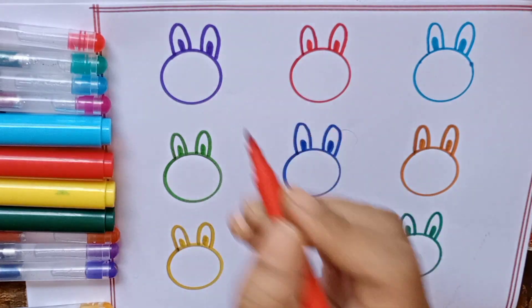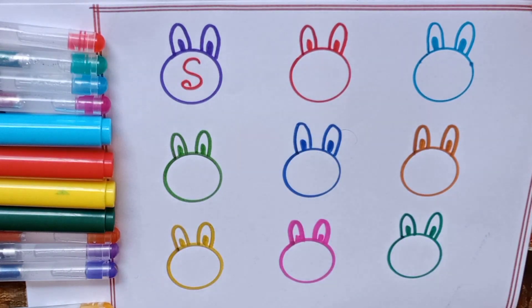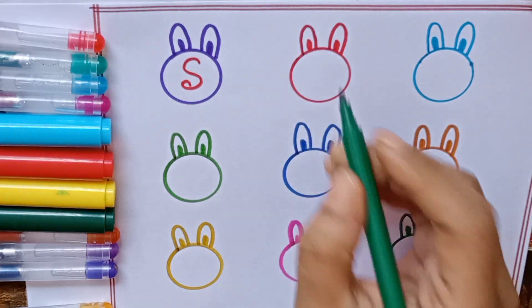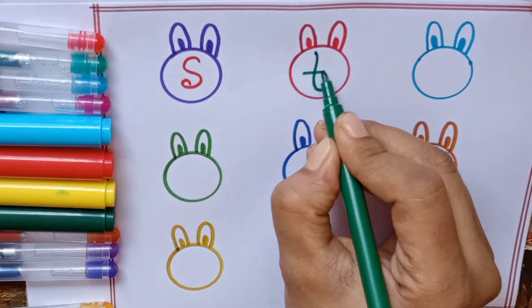Let's start with red color. S. S for sun. Green color. T. T for trump.